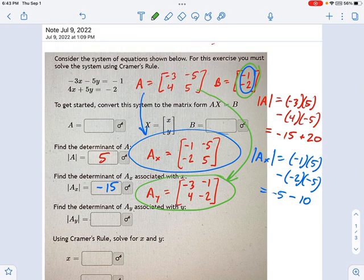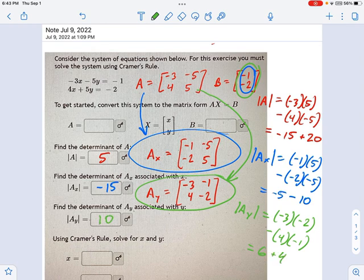And the last one, same process. The determinant of AY equals negative 3 times negative 2 minus 4 times negative 1. And that equals 6 minus negative 4, so that's 6 plus 4. That is 10.